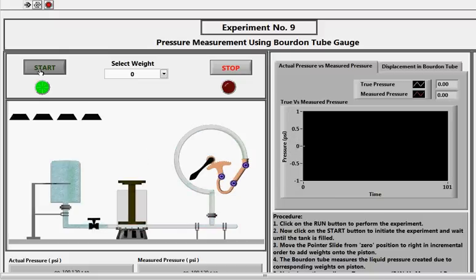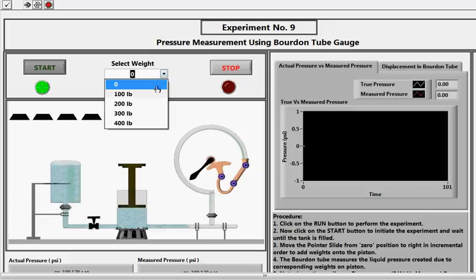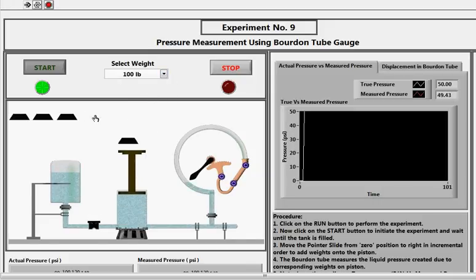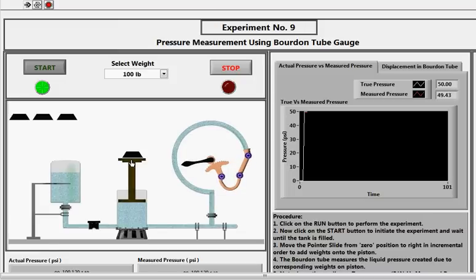Select the weight from the drop down menu. Suppose you select the 100 lb weight, then that 100 lb weight will come and rest on the piston. Due to that, pressure will be applied and the curve of the Bourdon tube expands and the needle connected to the curve moves and will indicate the pressure applied.